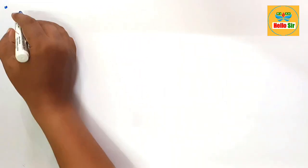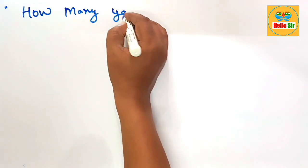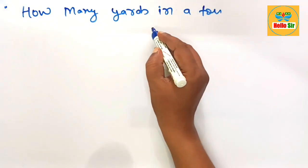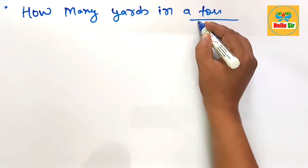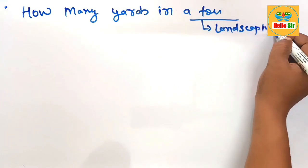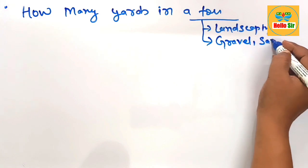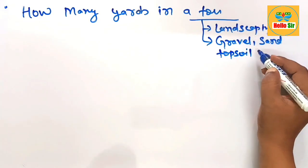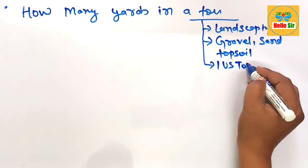Today, this video is about how many yards are in one ton. To figure out the number of yards in one ton, landscaping materials like gravel, sand, and topsoil are measured in cubic yards and tons.